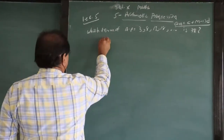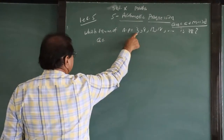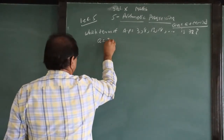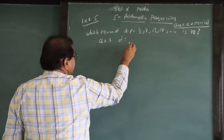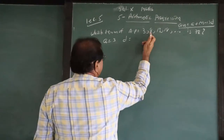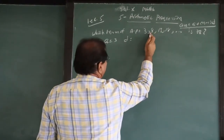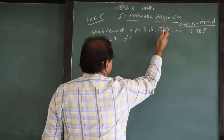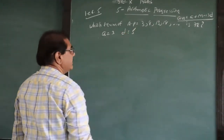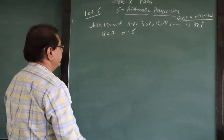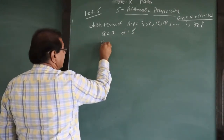First of all, what is A? It is 3. What is the common difference D? 8 minus 3 is 5, 13 minus 8 is 5, 18 minus 13 is 5. So the common difference is 5.